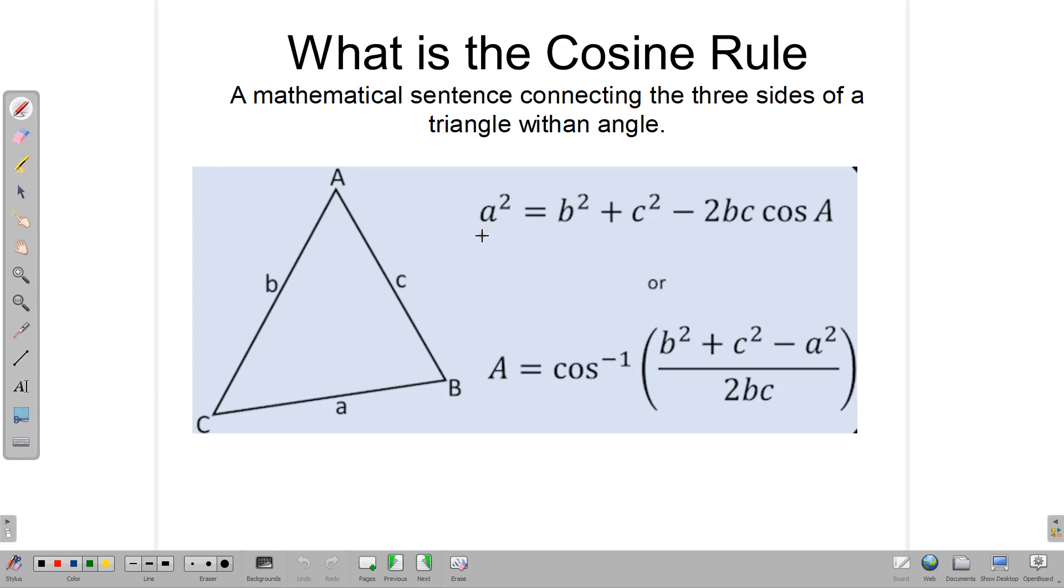First of all, we want to look at what is the cosine rule. In trigonometry, the cosine rule is a mathematical sentence that connects the three sides of a triangle with an angle. For example, let's say we wanted to find the length of side a. The length of side a would be given as a squared is equal to b squared plus c squared minus 2bc cos A.